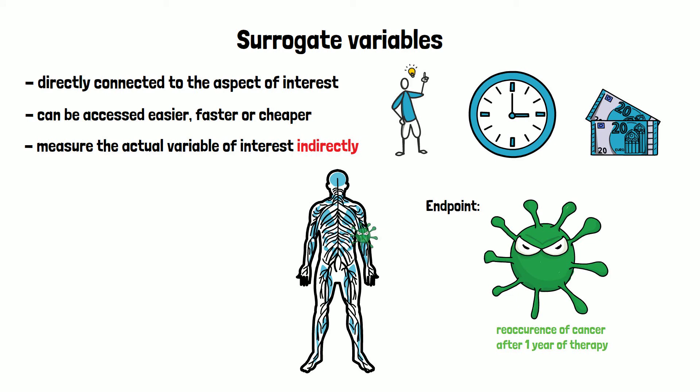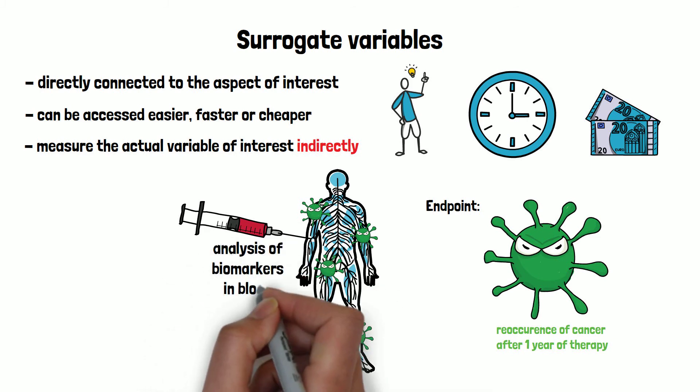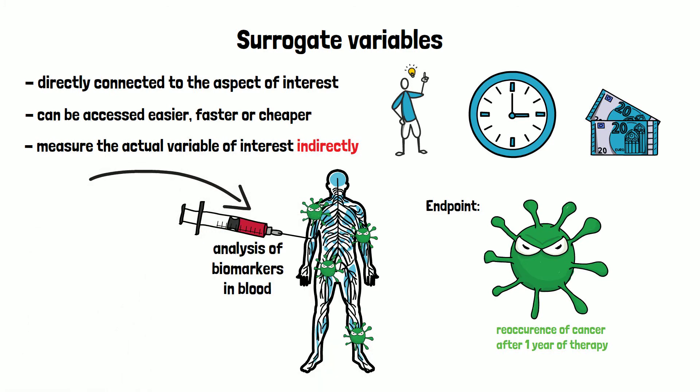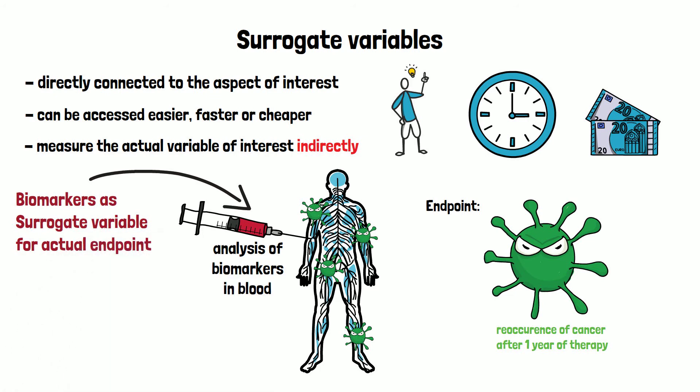Identifying cancerous cells in the entire body is not possible. However, a minimally invasive method that is not a huge burden to the patients would be the analysis of biomarkers in the blood. Biomarkers can therefore be used as surrogate variable for our actual endpoint, which is the presence of cancerous cells in the patient.